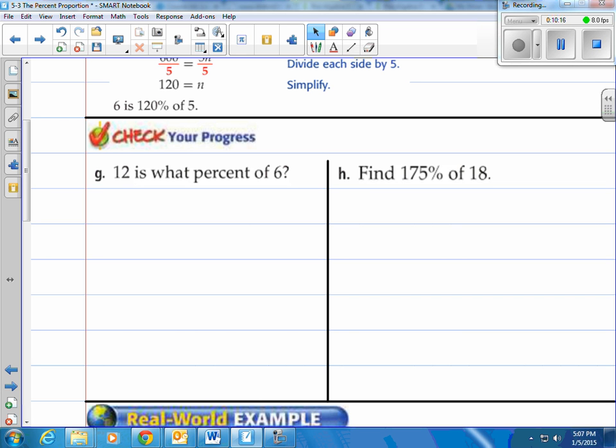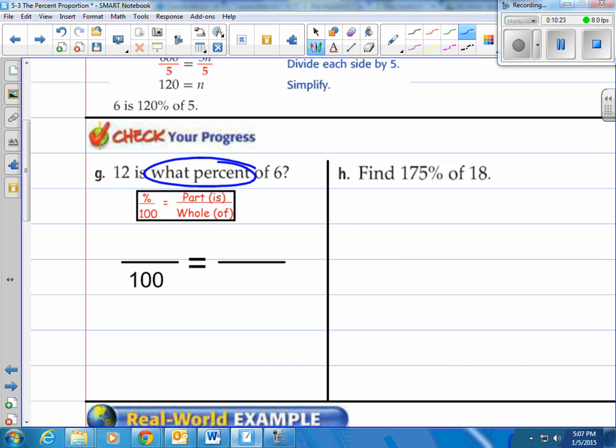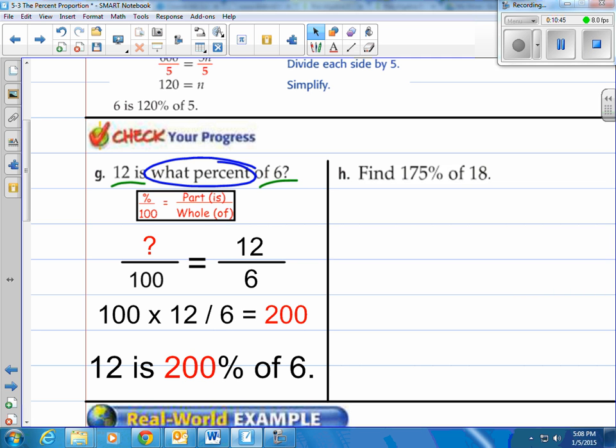In g here, 12 is what percent of six? Well, if you remember, here we go. We're looking for the percent. I can see that. It even asks, what percent? So we don't know what that is. So that's where the question mark is. The 12 is the is number, because it's right next to the is. And the of is the six. So we put that down there. So now we have cross multiplying 100 times 12 divided by 6 equals 200. So we would say 12 is 200% of six. If that makes sense, it's double.